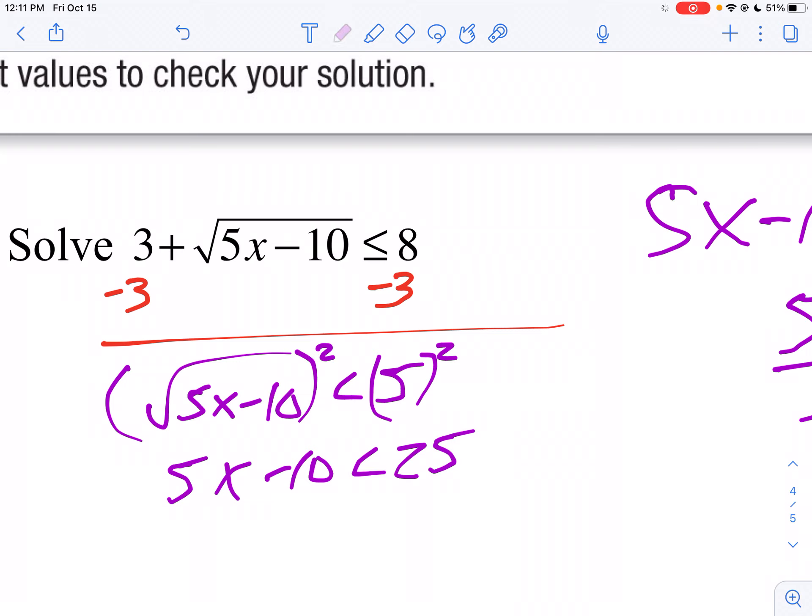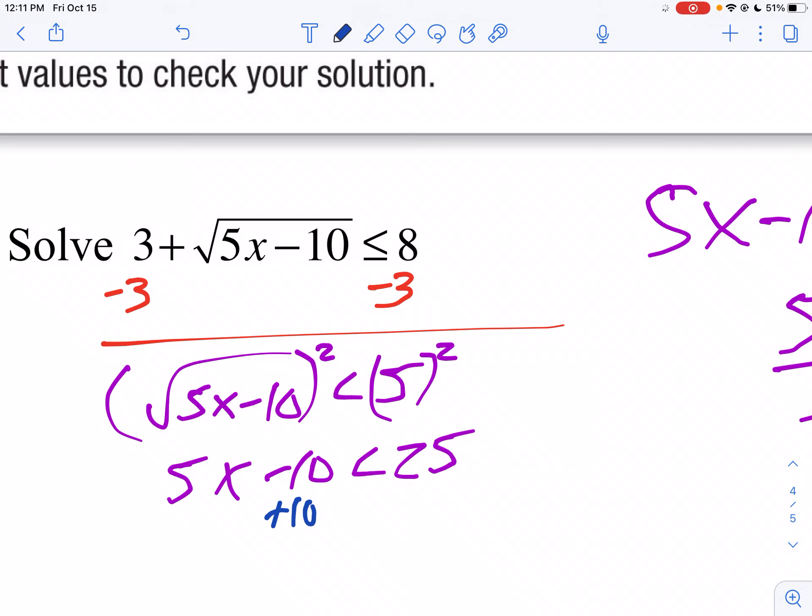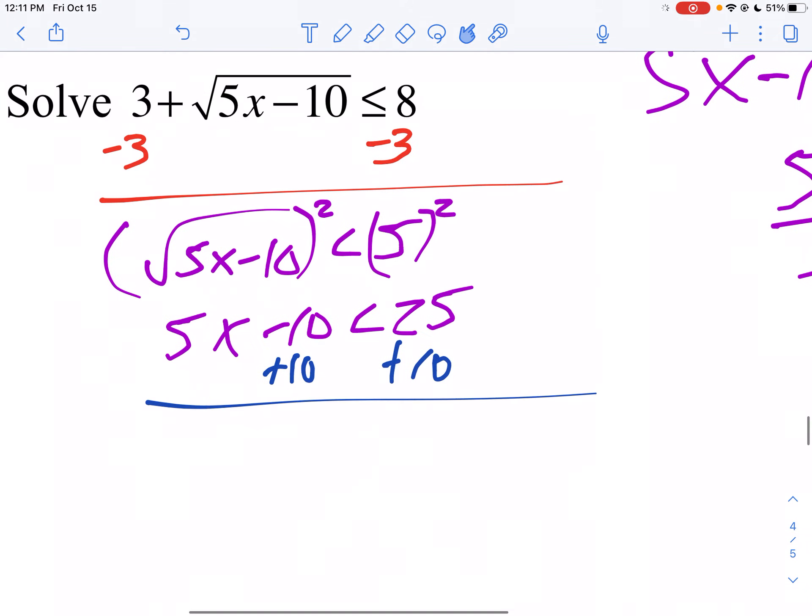So we get 5x minus 10 is less than 25. Add 10 to both sides. We get 5x is less than 35. Divide both sides by 5. So x is less than 7.